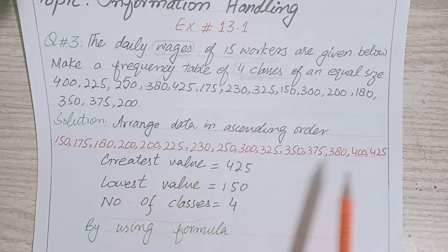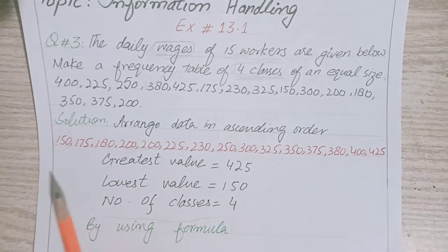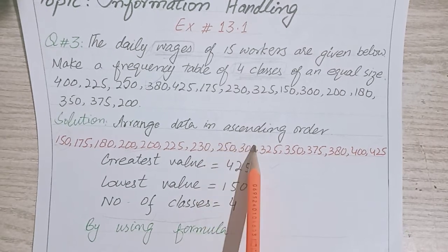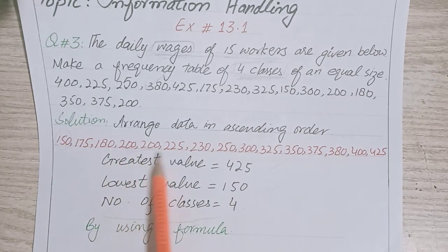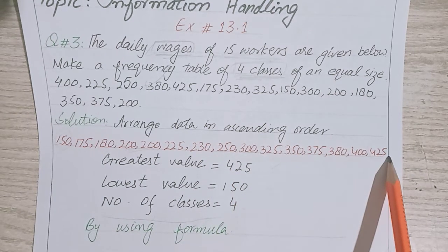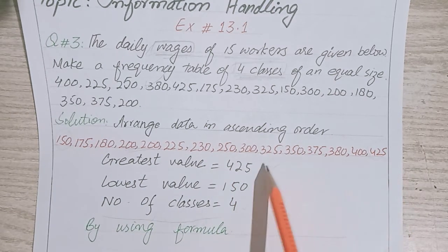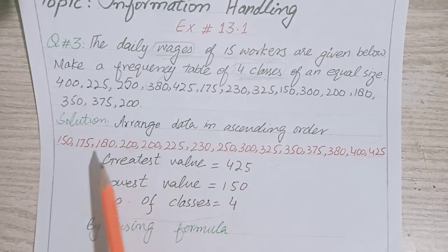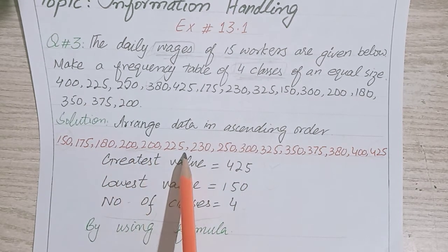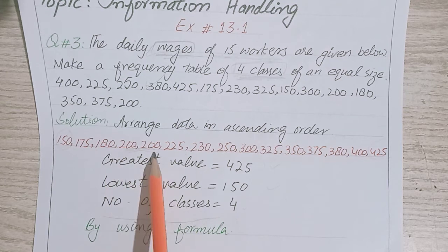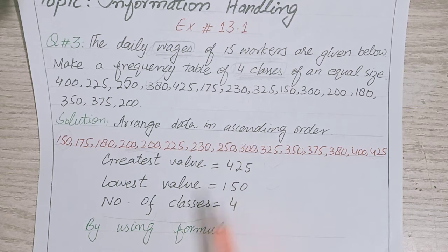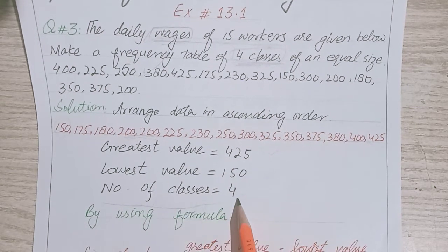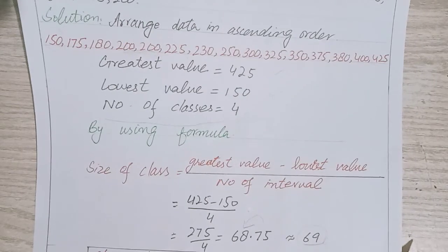First, you have to arrange the data in ascending order. The smallest number is 150 and the greatest number is 425. The number of classes is 4. By using the formula, we will solve it.